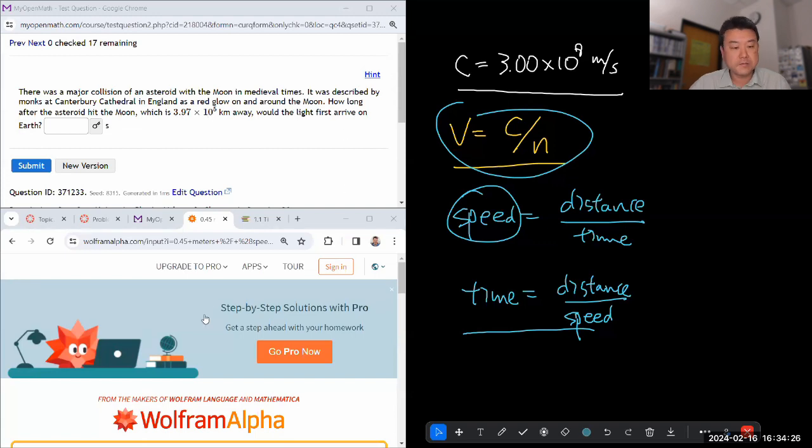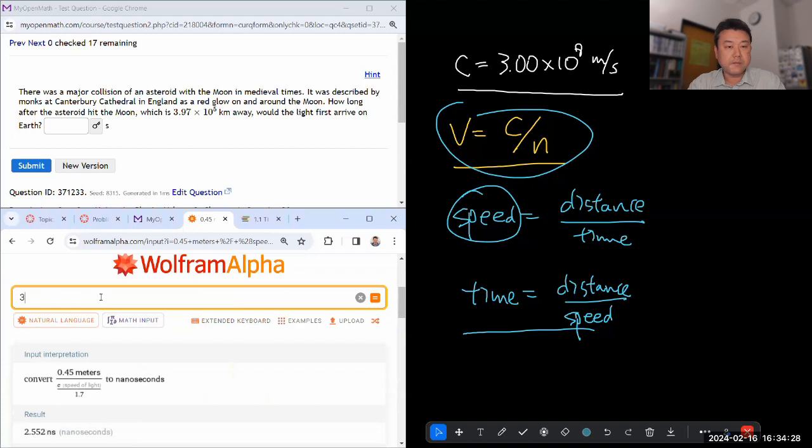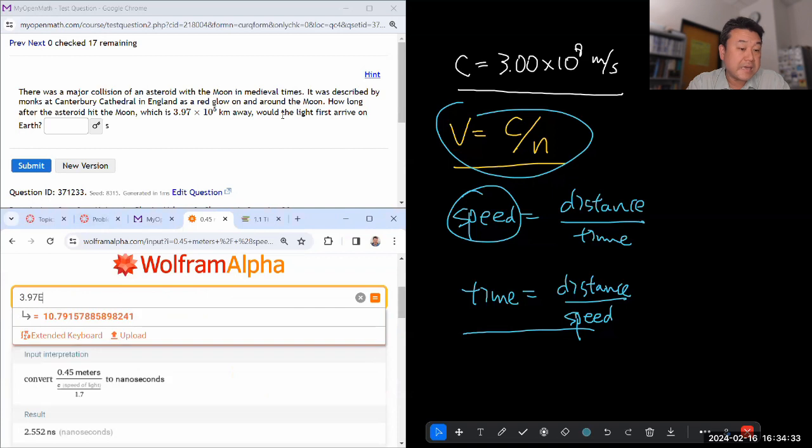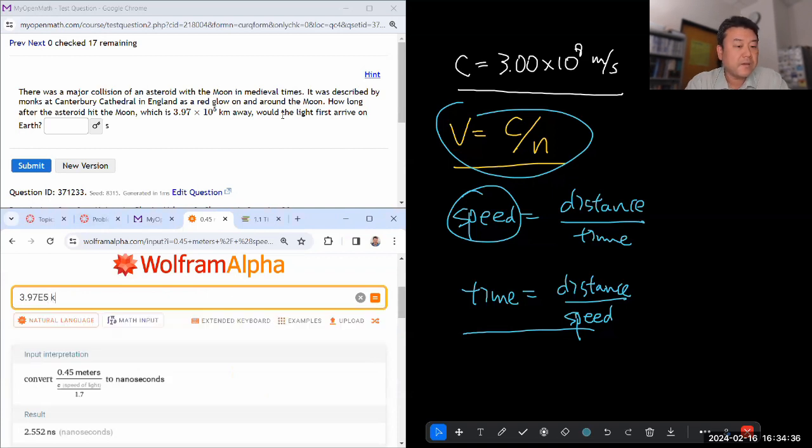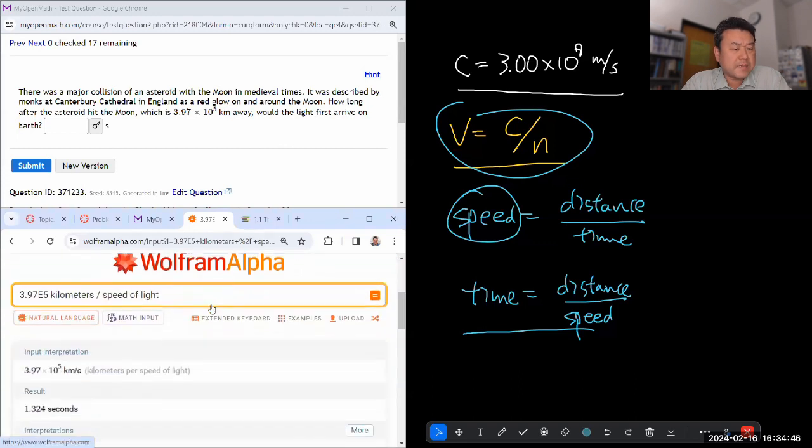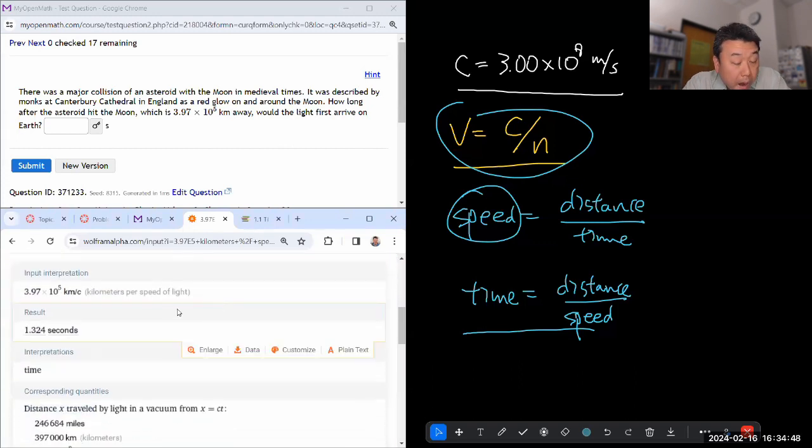So let's type it in. So we have 3.97 times, let me enter scientific notation this way, e5, that's 3.97 times 10 to the 5 kilometers divided by speed of light. Then it'll give me some time. It's going to be a fraction of a second, like some milliseconds. Oh wow, oh yeah, I keep forgetting the moon is like one light second away, kind of far away.